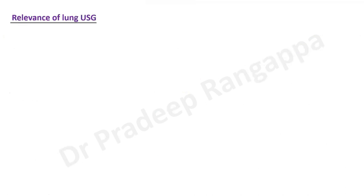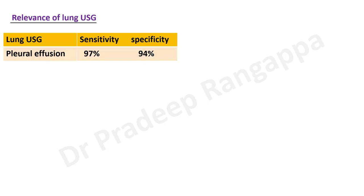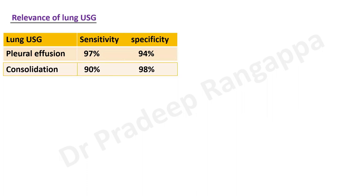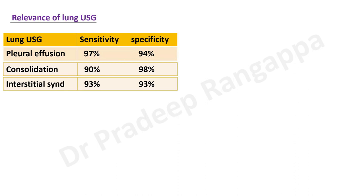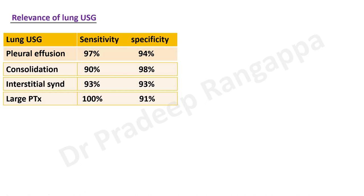What is the relevance of lung ultrasound? It is shown to be very valuable in determining various pathologies. For pleural effusions, sensitivity is 97% and specificity is 94%. For consolidation, sensitivity is 90% and specificity is 98%. For interstitial syndrome — pulmonary edema, cardiac or non-cardiac — sensitivity is 93% and specificity is 93%. For large pneumothorax, sensitivity is 100% and specificity is 91%. For occult pneumothorax, sensitivity is less but specificity is 100%.